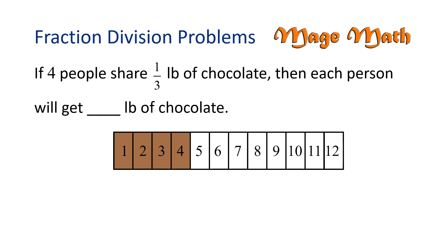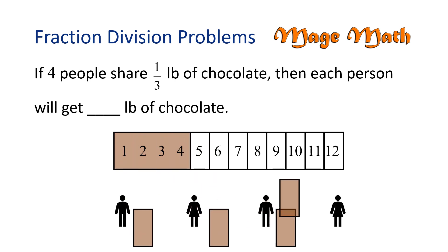That's right! There's 12 skinny rectangles all together. If each of our 4 persons get 1 skinny rectangle, then they get 1 twelfth of 1 third pound of chocolate. Let's check our work.